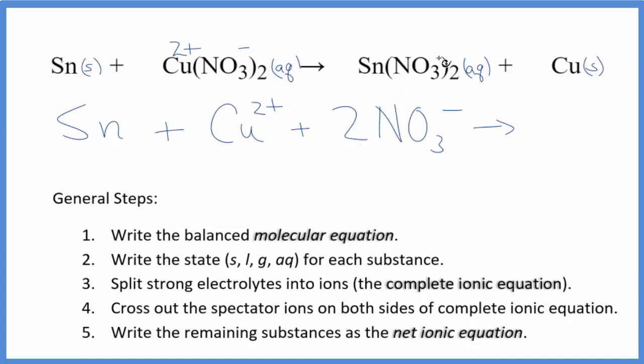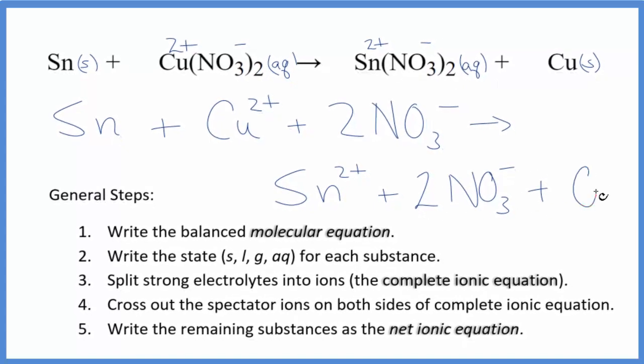For the products, again, we don't know the charge on tin because it's a transition metal, but we do have two nitrate ions. We know each one is a 1 minus. This has to be 2 plus. So we have the tin 2 ion, Sn2+, plus two nitrate ions, just like in the reactants, plus that copper right there. And this is what's called the complete or total ionic equation.